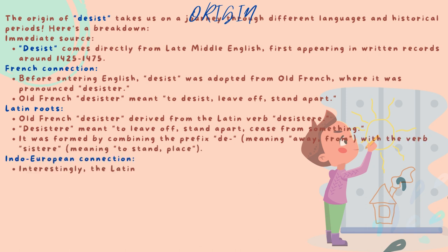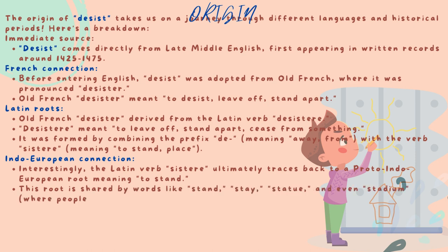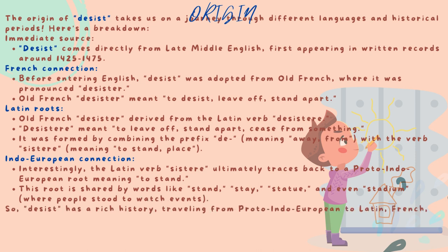Latin roots: Old French desister derived from the Latin verb desisteri. Desisteri meant to leave off, stand apart, cease from something. It was formed by combining the prefix de, meaning away or from, with the verb sistere, meaning to stand or place.